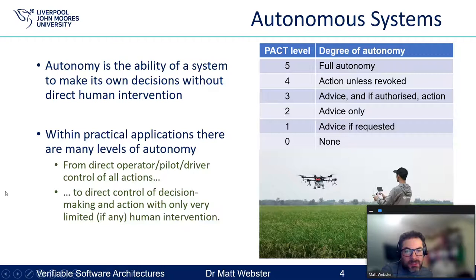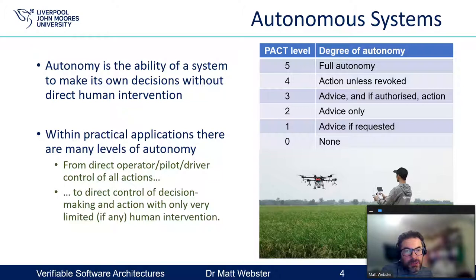Although there are other taxonomies that pertain to other domains, this one is quite a useful way of thinking about it. If you look at the table on the right, the PACT levels go from five down to zero — five being full autonomy, zero being no autonomy, so basically direct control by the human operator. Then you've got different levels within that range, starting from giving advice at level one, advice all the time at level two, level three is advice and if authorised action, and level four is action unless revoked, meaning the autonomous system will do something unless it's been told not to by the human operator.